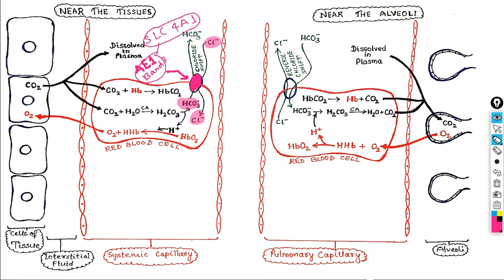So chloride ion is taken in and bicarbonate ion is taken out from the RBC. It is clear why bicarbonate is transported out — because if it accumulates, this reaction will slow down. To keep the reaction going at a fast pace, accumulation of bicarbonate must be prevented, and so it is transported out.